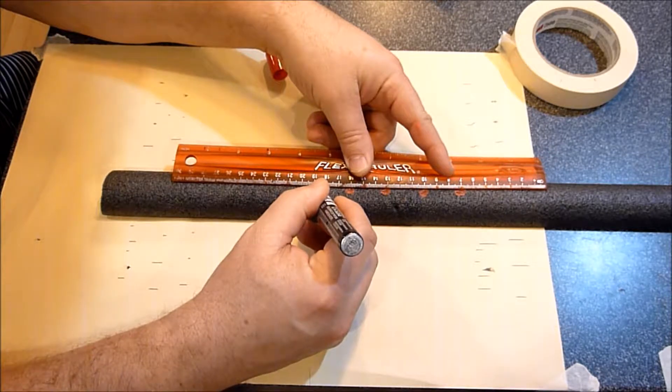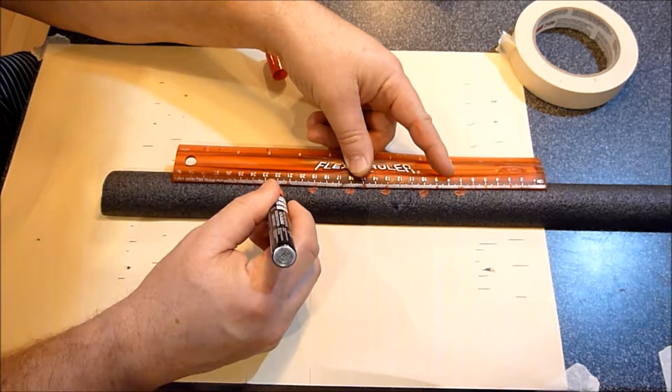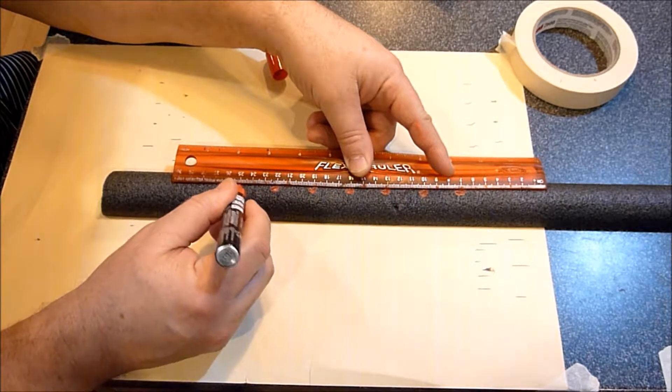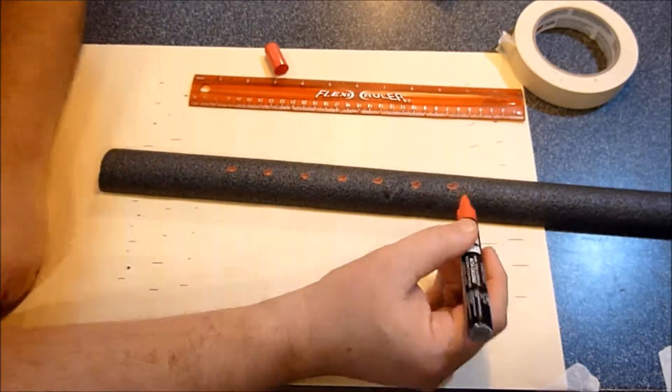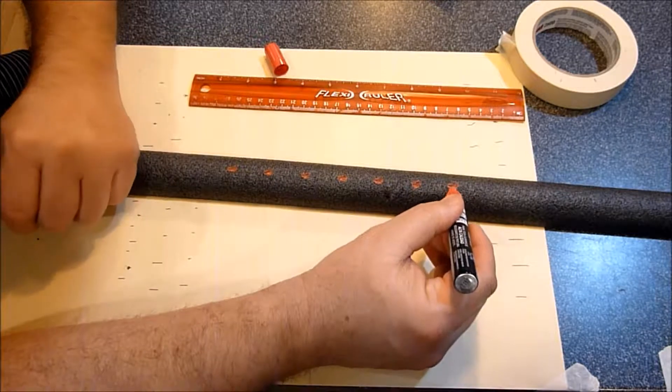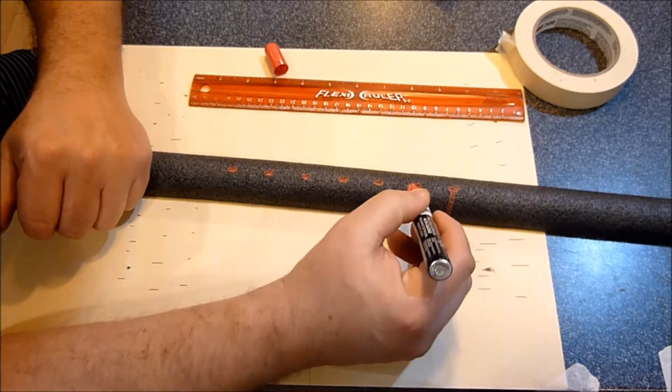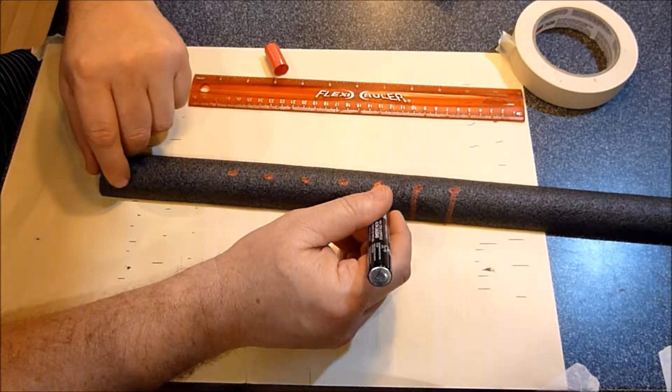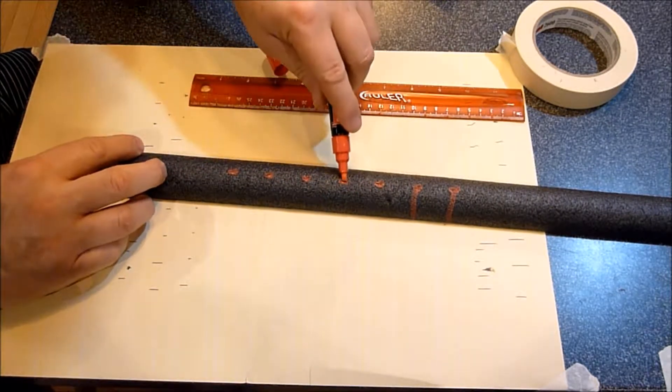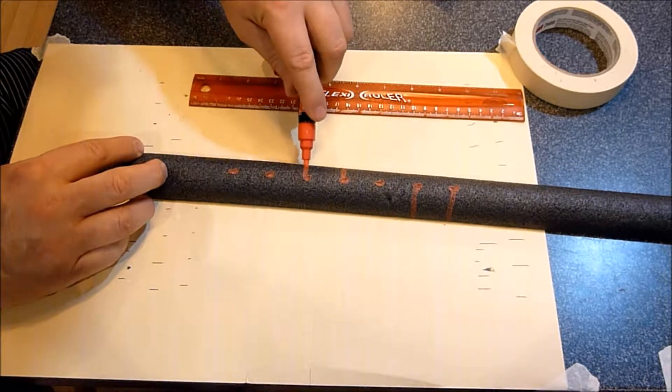Now this one's more of a freehand construction, but you just want to have opposite triangles. So you want to have a triangle this way and this way, and then skip a measurement and then have a triangle this way and this way.